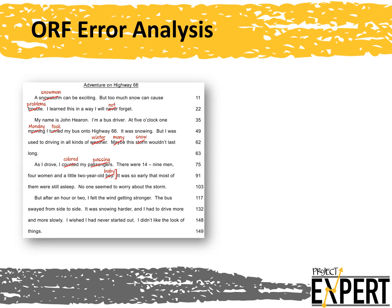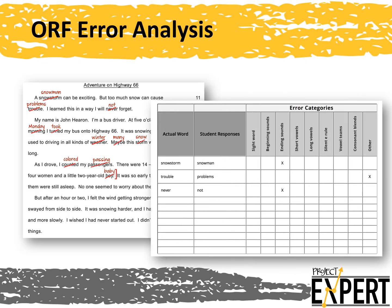If you have been using ORF for progress monitoring and keeping notes on the errors students make, you can use these for an ORF error analysis. To do an ORF error analysis, take careful notes during ORF probes. For each student error, record information such as the actual word, the word the student said, and the characteristics of the missed word. For example, is the word a sight word? Did the student miss the beginning sound? Is it a word with a short vowel?